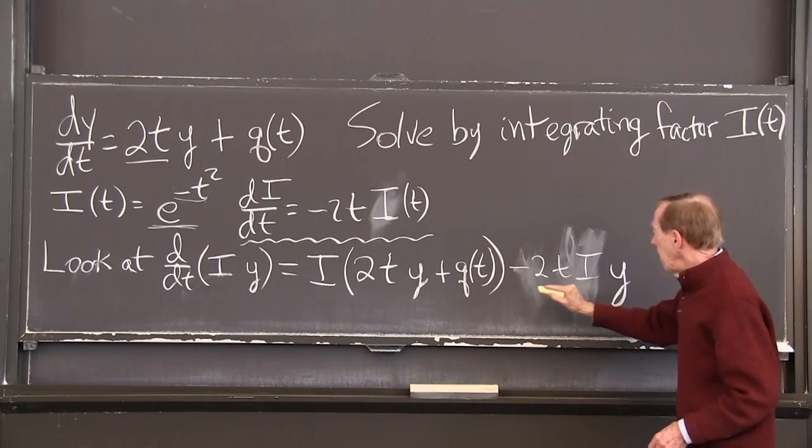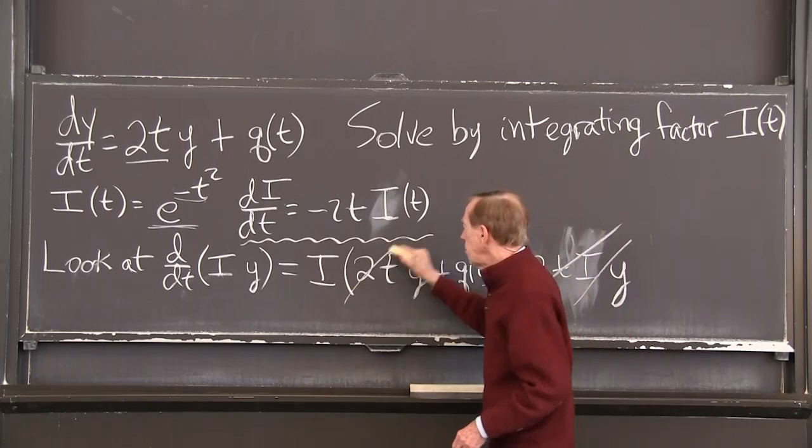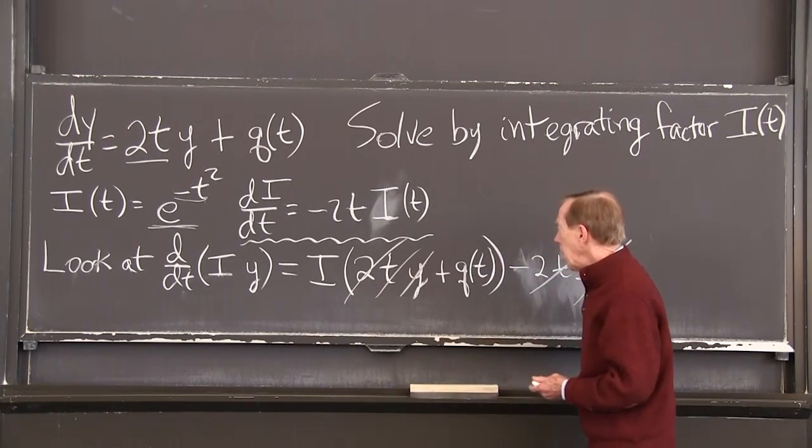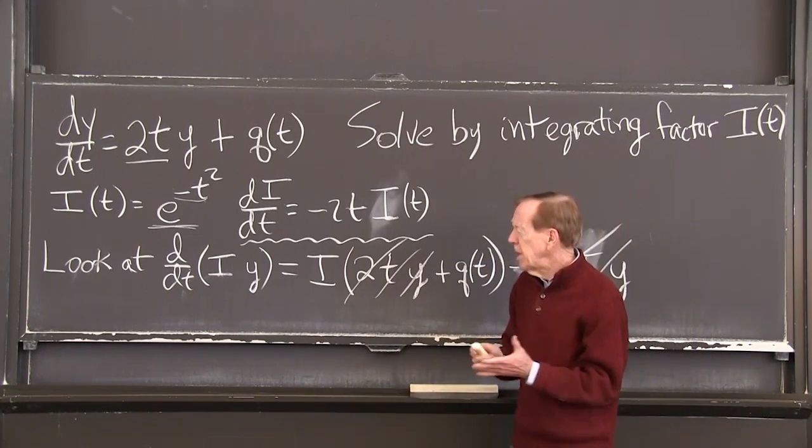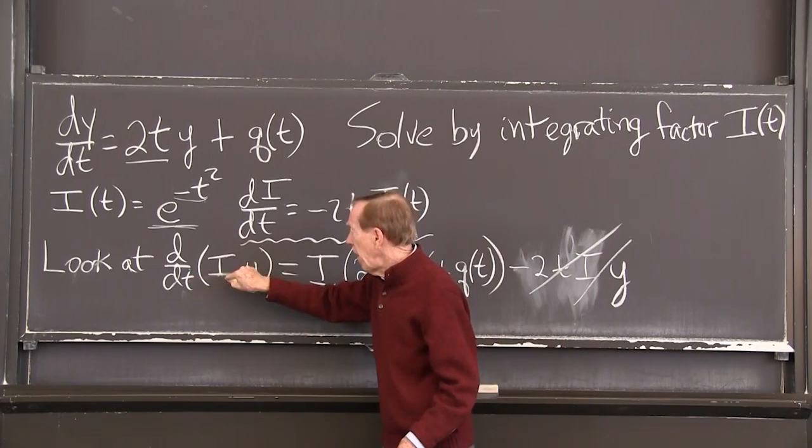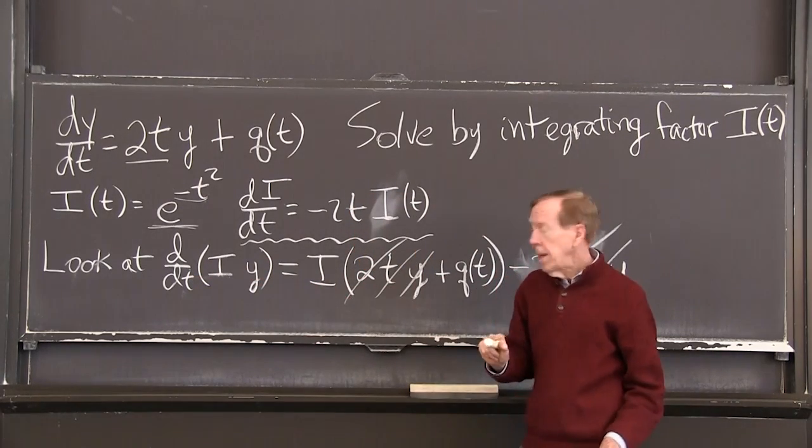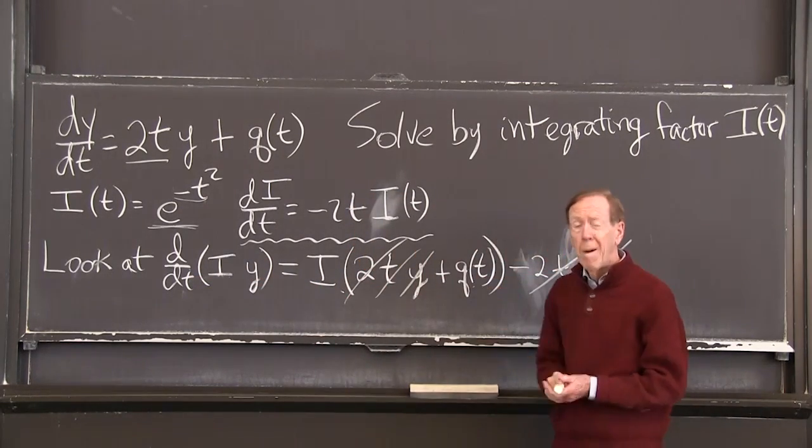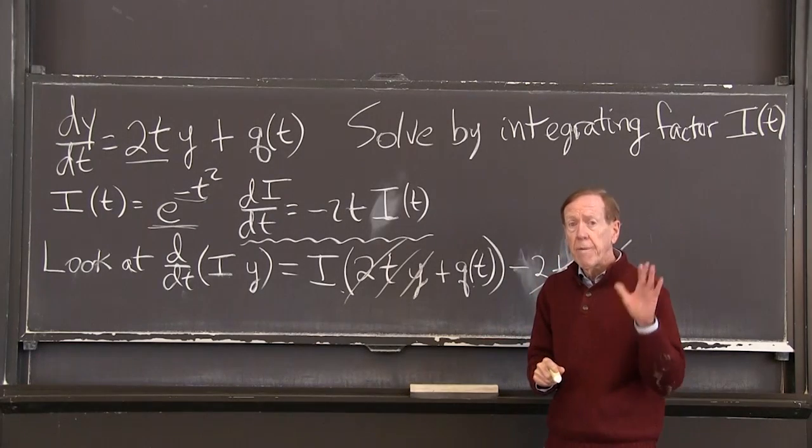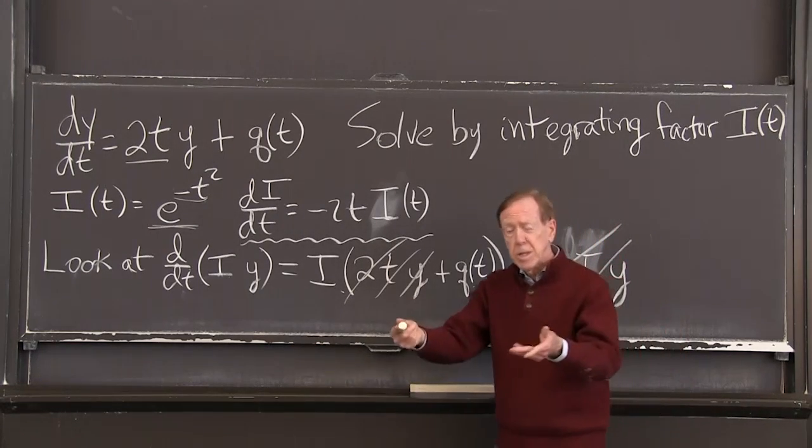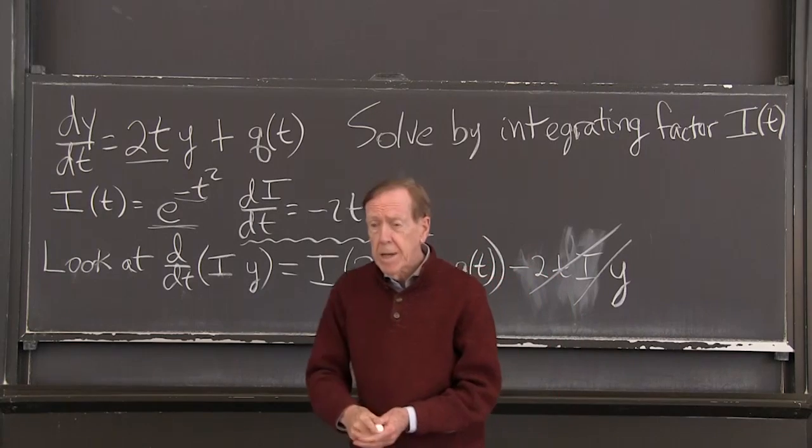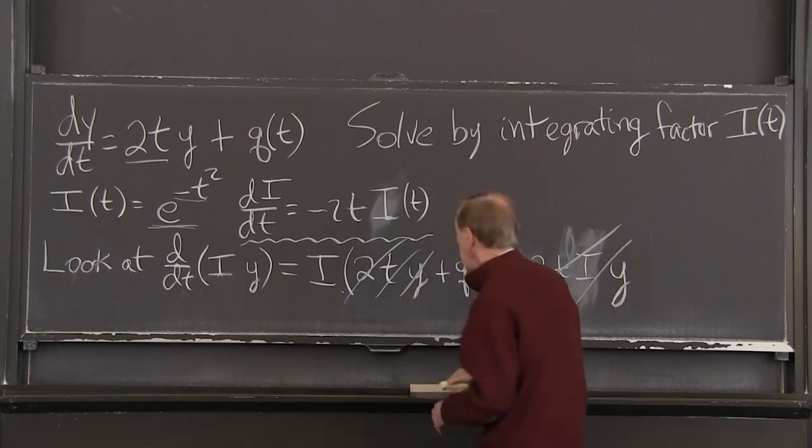Look, minus 2ti y cancels 2ti y. So I have a nice equation now. Well, the derivative of i y is iq. The derivative of i y is iq. I can just integrate both sides. And that's the key.